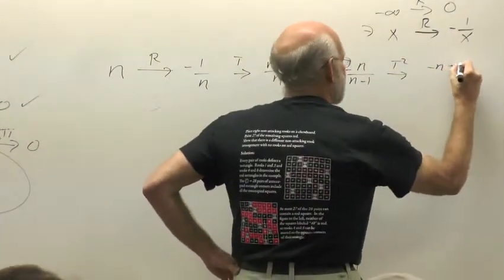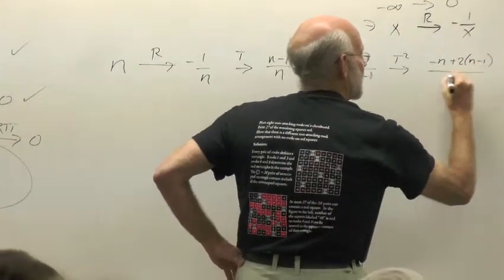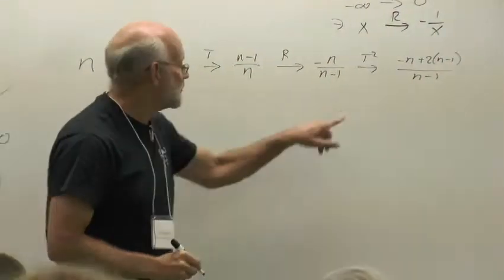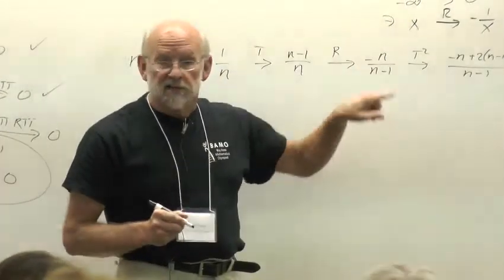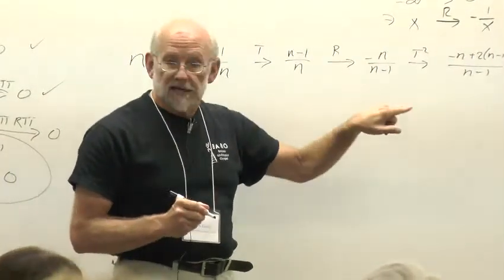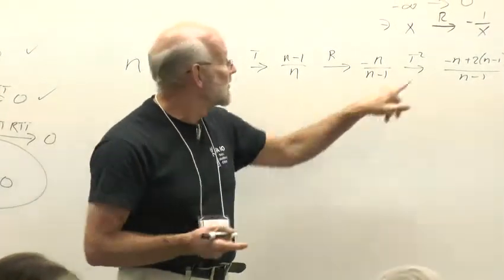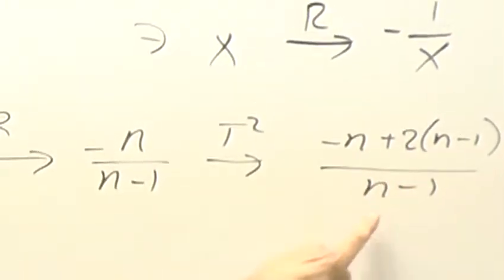N plus 2 times N minus 1 over N minus 1, right? We have to add, the common denominator will be N minus 1. So N minus 1 over N minus 1 is 1, but I have to add 2 of them, so it's 2N minus 1 over N minus 1. And now what do I get here?